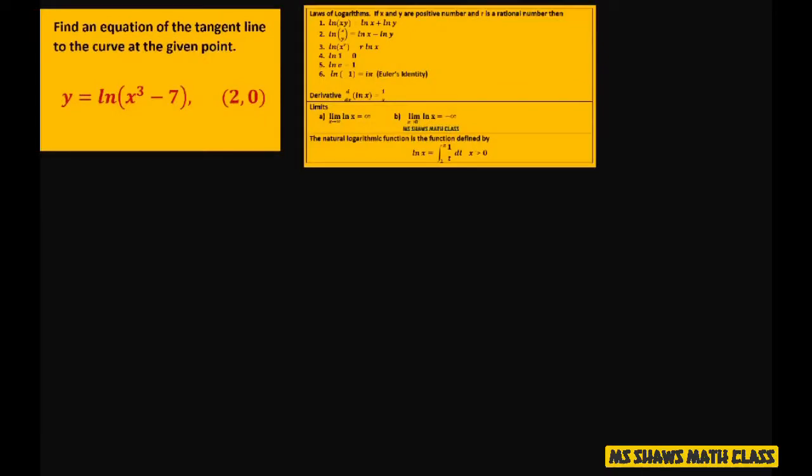So we're going to take our derivative y prime, and we're using our derivative function here. This is like our x, so you just do 1 divided by x cubed minus 7, multiply it by the derivative of this inner function, which is 3x squared. So this ends up being 3x squared divided by x cubed minus 7.